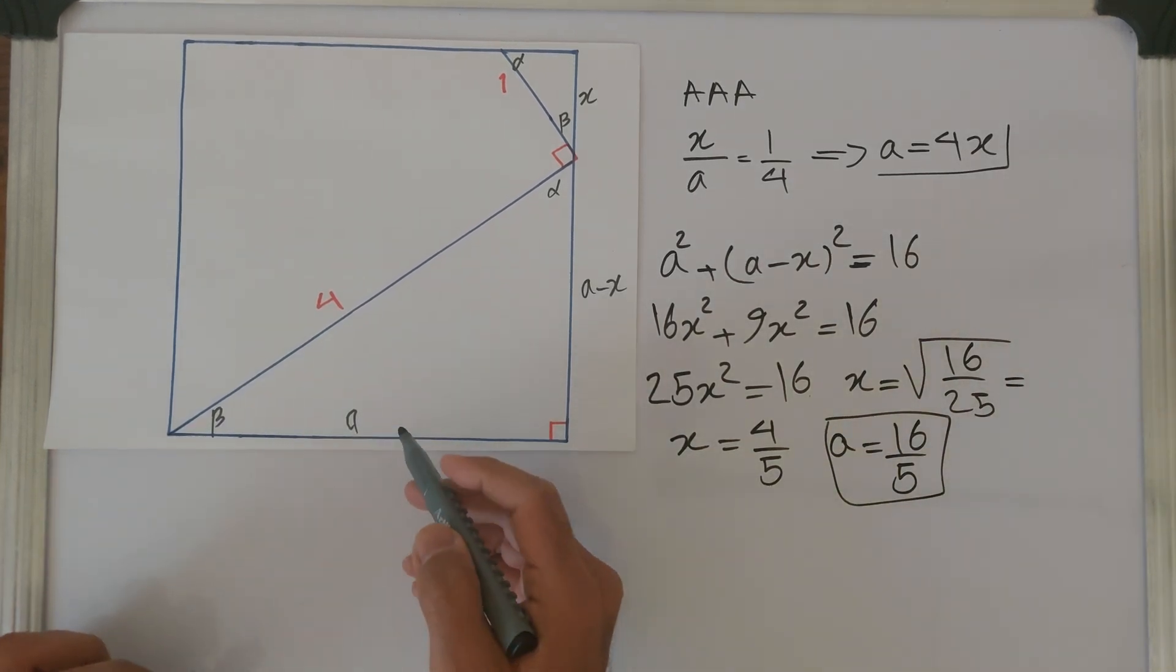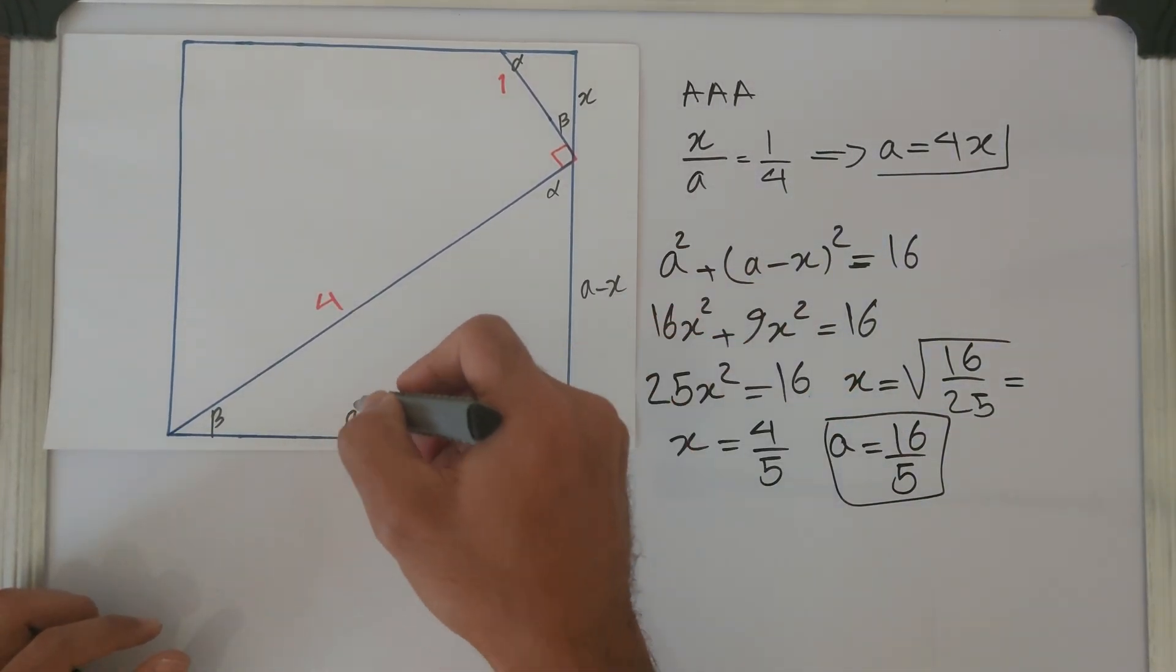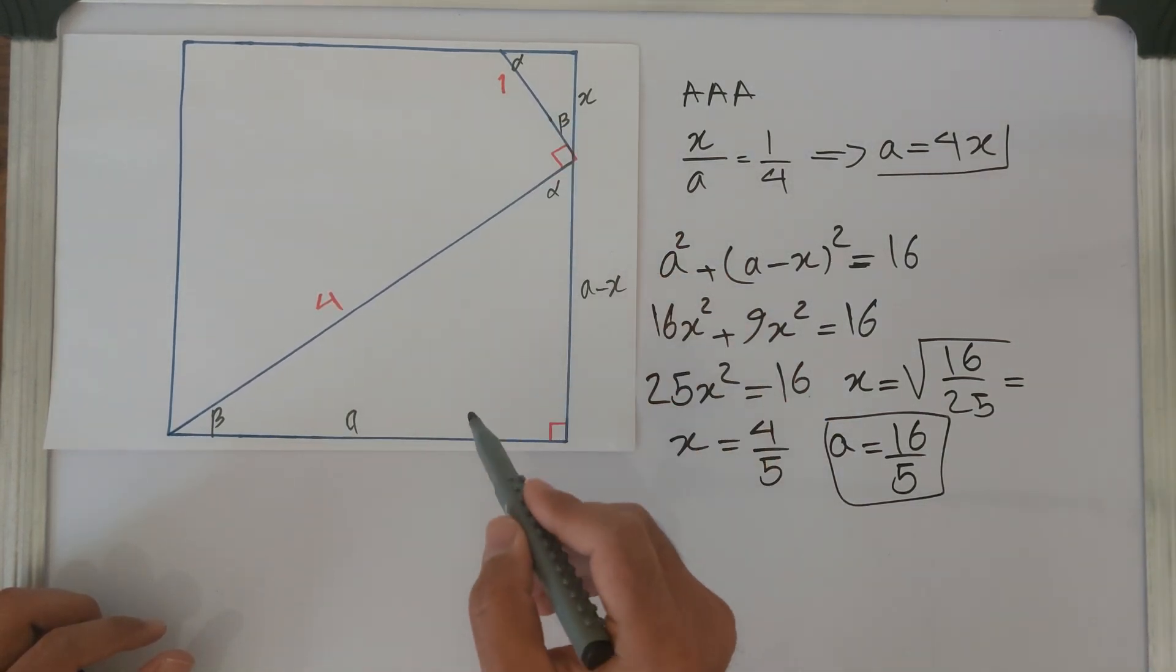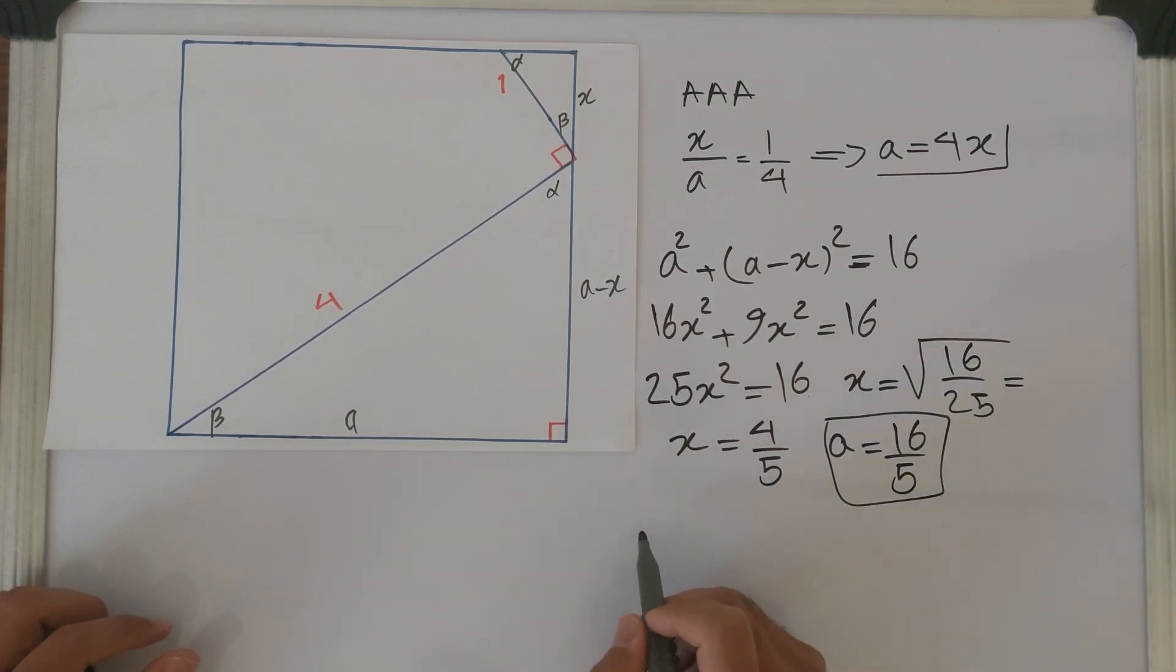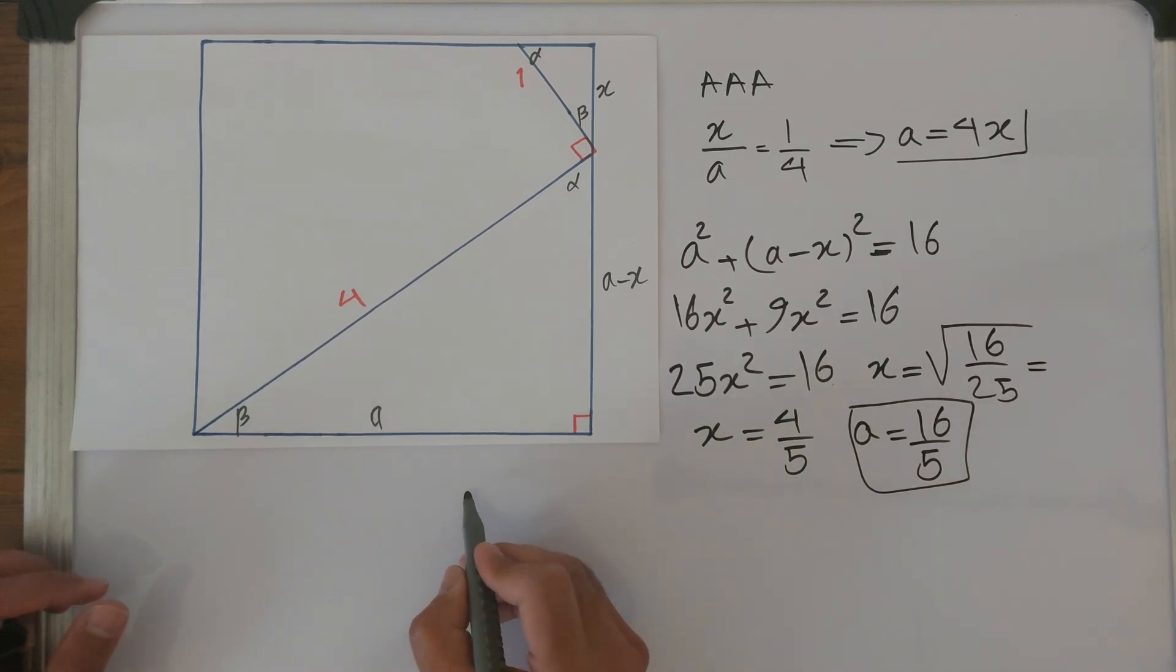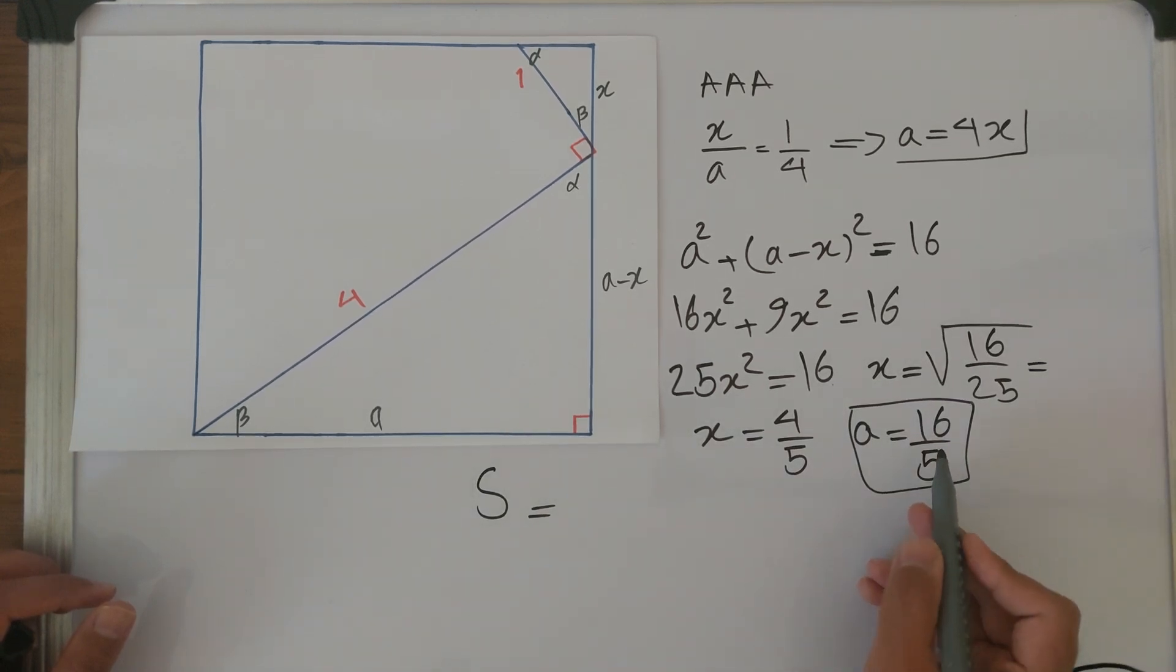So now that's easy, we found out a. We calculated the length of a. If we have this setup with hypotenuse 4 and hypotenuse 1, then the side of this square must be 16 over 5, which is a little more than 3.